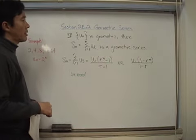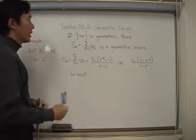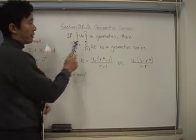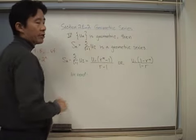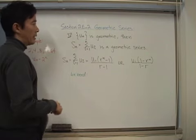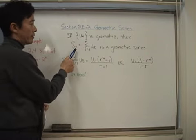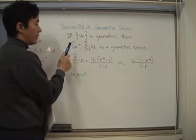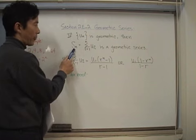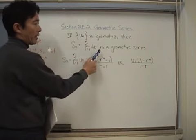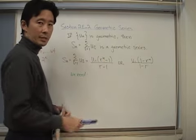So let's start off again with a sequence first and let's say that if u sub n is geometric, then the series of the first or the sum of the first n terms which is represented by this is called a geometric series.